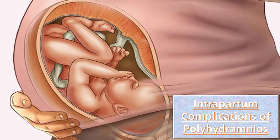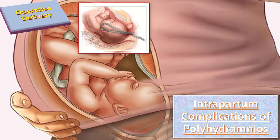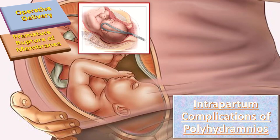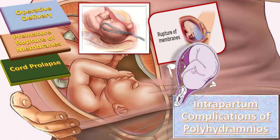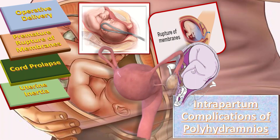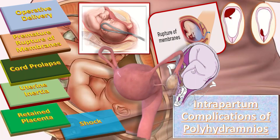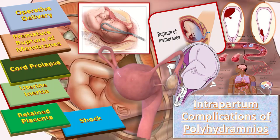Next come the intrapartum complications of polyhydramnios. The incidence of these complications appears higher with polyhydramnios. First, the operative delivery rate is higher when polyhydramnios exists due to labor dystocia, excessive uterine size, poor contractions, and increased risk of unstable lie. Second, premature rupture of membranes. Third, cord prolapse, which occurs when there is sudden uterine decompression following membrane rupture, though the exact risk remains unknown. Additional intrapartum complications include uterine inertia, risk of retained placenta, and the risk of shock, which should not be underestimated.